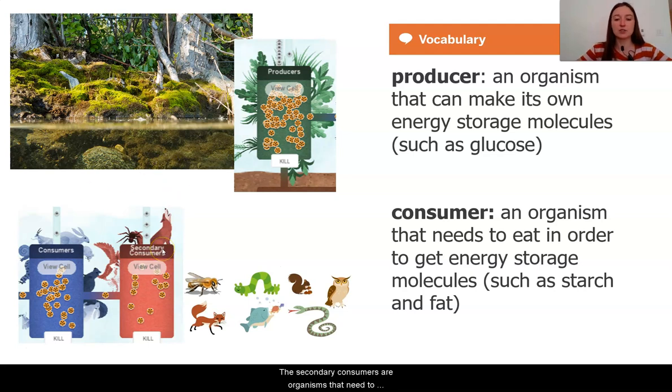The secondary consumers are organisms that need to eat in order to get energy storage molecules. So these secondary consumers are actually eating other animals. These would be consumer populations that we think of as predators. I see here like a wolf, for example, or maybe a bear. They are eating things that are eating the plants that make those energy storage molecules.